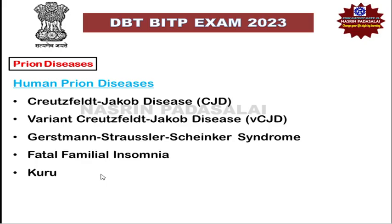Kuru is the first prion disease identified in humans. It is generally associated with cannibalism, because people residing on the island of New Guinea in Australia had a ritual where, when a person died, the people would break open the skull and eat the brain tissue of the dead person. In some cases, the brain would contain this abnormal pathogenic protein called prion protein, so by that mode a healthy individual would acquire prion protein inside their body.